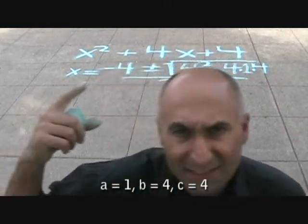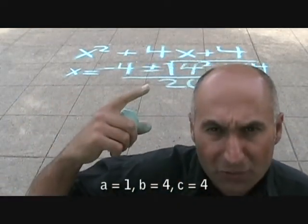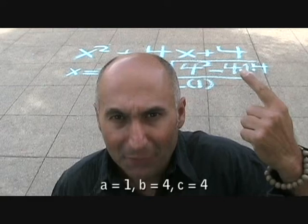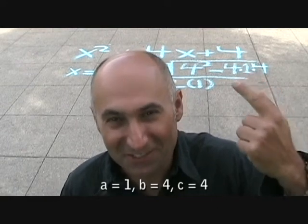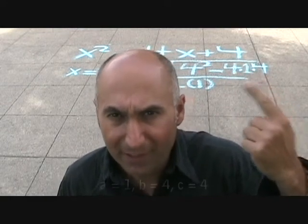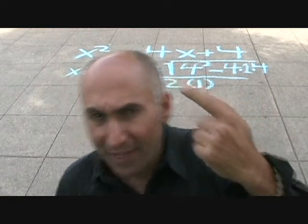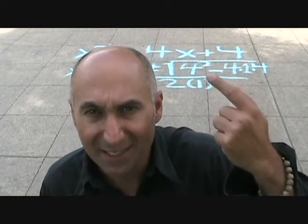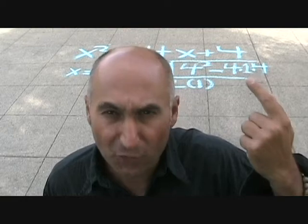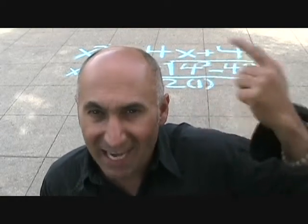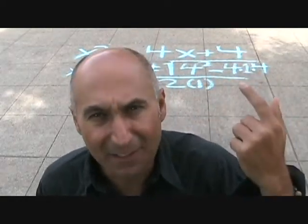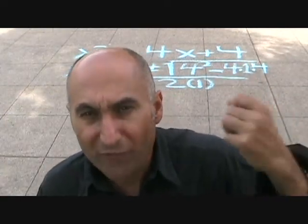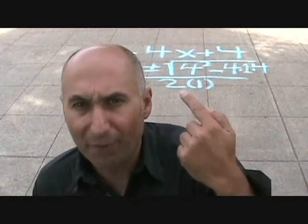So what we end up having is x equals negative 4, plus or minus the square root of 4 squared minus 4 times 1 times 4, all divided by 2 times 1. Negative 4 stays as negative 4. 4 squared is 16, minus 4 times 1 times 4 is 16. So inside the root symbol we have 16 minus 16, which gives us the square root of 0. The square root of 0 is just 0, so we end up with negative 4 divided by 2.